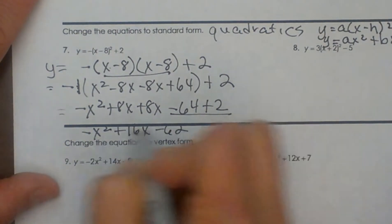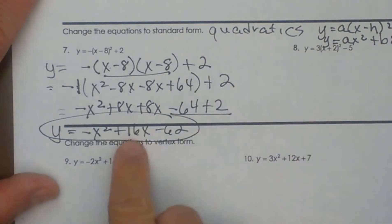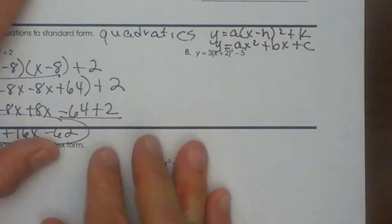And that's my equation in standard form, where a is -1, b is 16, and c is -62. Let's look at one more example.